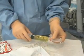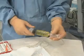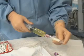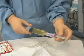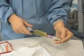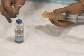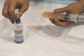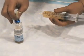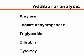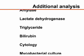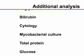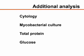Aspirated fluid should be immediately placed into appropriate specimen tubes. A tube without additives should be sent for chemical analysis of albumin and total protein concentrations. An EDTA tube should be sent for evaluation of cell count and differential. Blood culture bottles should be inoculated at the bedside using aseptic technique if spontaneous bacterial peritonitis or other infection is a diagnostic concern. Specimens for other tests, such as cytology or mycobacterial culture, may be sent depending on the clinical scenario.